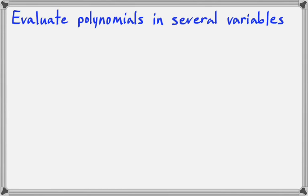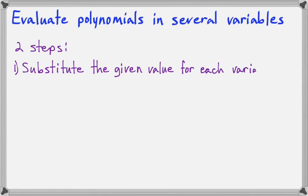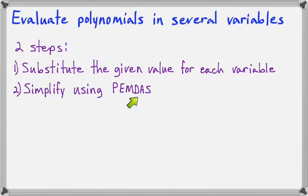In this lesson, we're going to evaluate polynomials in several variables. In the past we've evaluated expressions by plugging in a given number for a variable. In these problems, there will be more than one variable, and that's the only difference. There are two steps: we'll substitute the given value for each variable, and then simplify using order of operations, or what we've called PEMDAS.